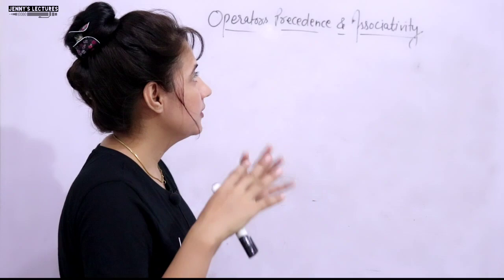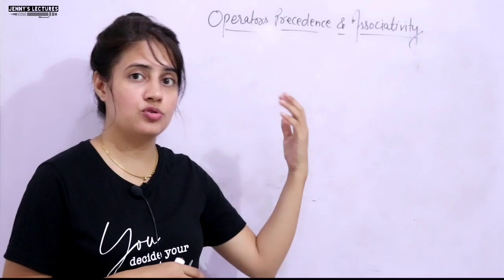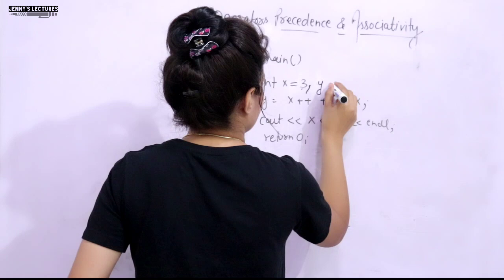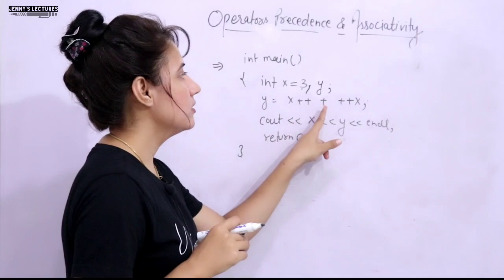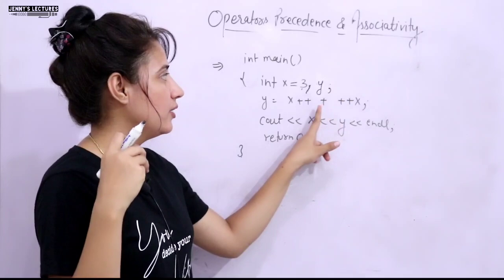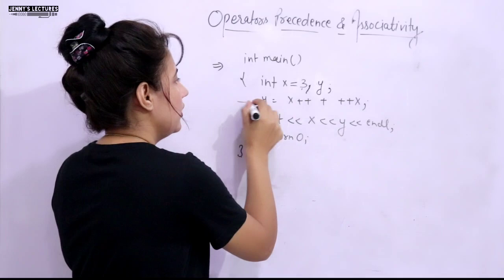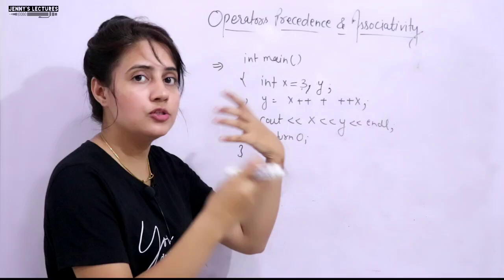Now, I've already covered operator precedence and associativity in the previous video, along with the precedence chart. Let me write down a question: x = 3 and y = x++ + ++x. Here we have a post-increment, two pre-increments, and a binary plus operator — four operators total.